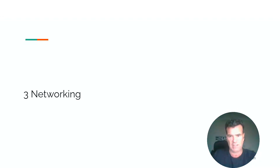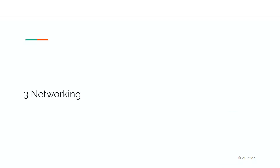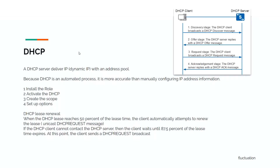Let's start with DHCP. What is DHCP? DHCP is just a server that will give you an IP address. You have a pool, and each computer, laptop, printer — everything will take an IP from this pool. If you don't need the IP anymore, you can release it and it will go back to the pool.